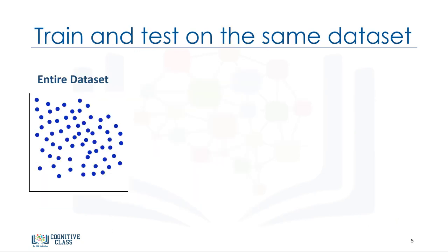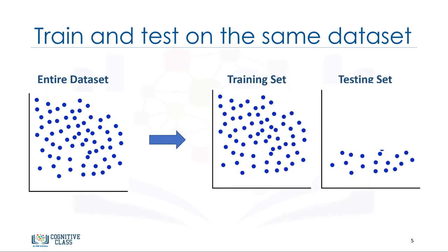So, the first evaluation approach we just talked about is the simplest one: train and test on the same data set. Essentially, the name of this approach says it all. You train the model on the entire data set, then you test it using a portion of the same data set. In a general sense, when you test with a data set in which you know the target value for each data point, you're able to obtain a percentage of accurate predictions for the model. This evaluation approach would most likely have a high training accuracy and a low out-of-sample accuracy, since the model knows all of the testing data points from the training.